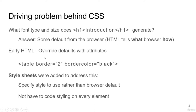In early HTML, it overrides the default with attributes. For a table tag, I will have two attributes: border and border color. The table has two attributes — one is border, second is border color. The border holds the value of 2, meaning the border should be size 2. And for the color I want to set for the border, it can be red, blue, or black — I have set the border color to be black.